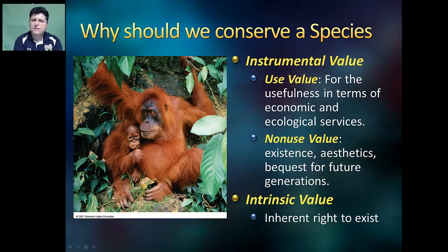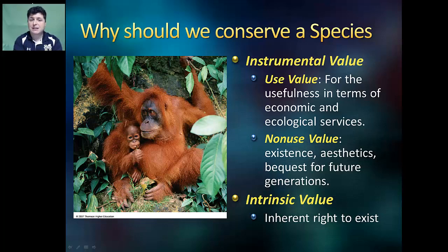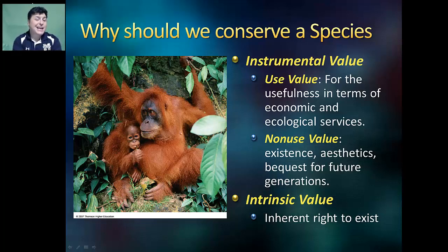Why should we conserve a species like the orangutan? There are two reasons why conservation should be at the forefront of our minds: an organism's instrumental value and its intrinsic value. An organism's instrumental value can be broken up into two parts — its use value and its non-use value. An organism's use value is its usefulness in terms of economic and ecological services that it performs.